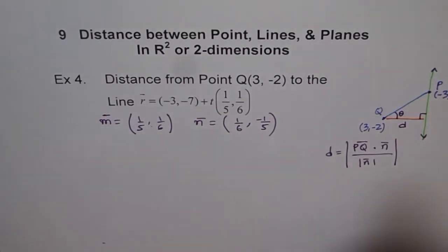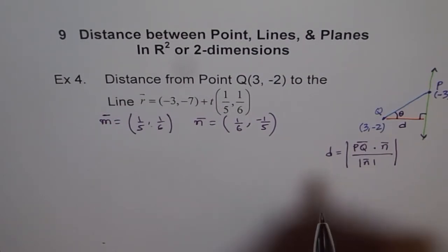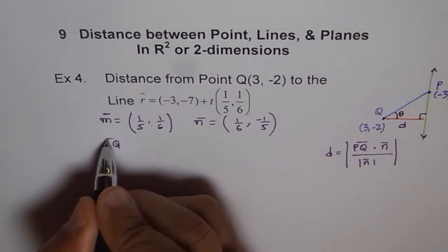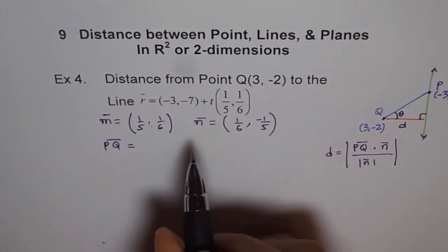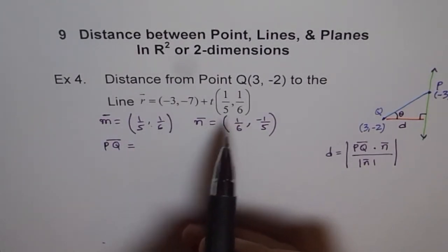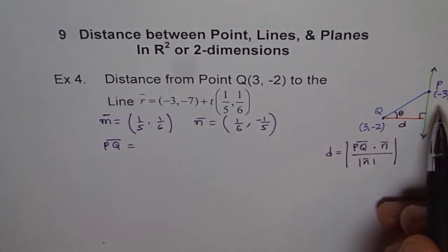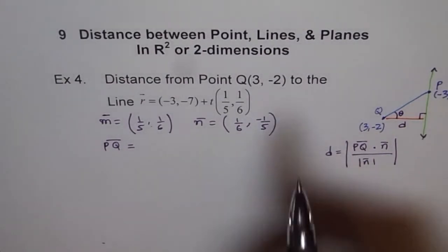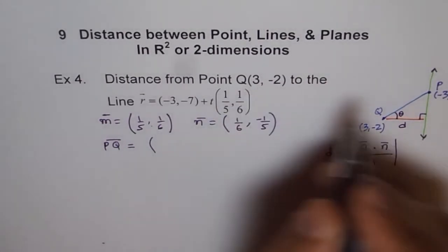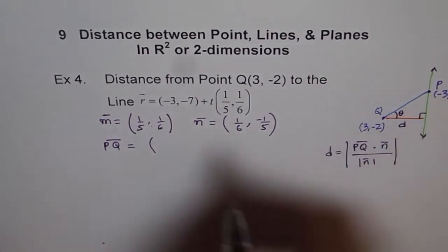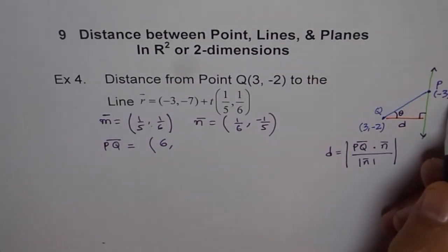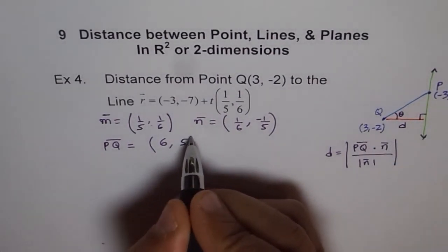Now what is PQ? P to Q. PQ for us: point P is (-3, -7) and point Q is (3, -2). So PQ will be 3 minus (-3), which is 6, and -2 minus (-7), which will be 5.